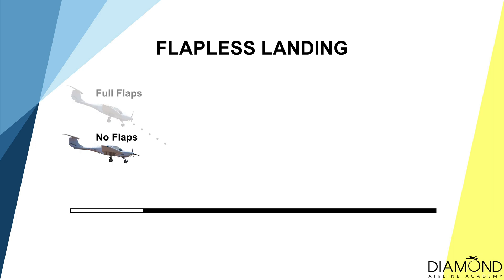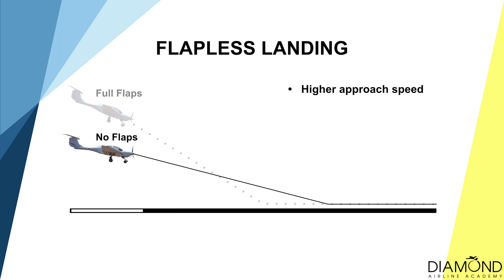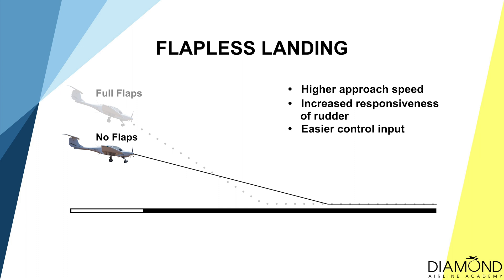During strong crosswind conditions, conducting a full flap landing can be quite challenging. Hence, a flapless landing can be used in an attempt to stabilise the approach and increase the chances of a successful landing. One of the reasons why a flapless landing can be easier during strong crosswind conditions is because of the higher approach speed. When the approach speed is faster, there will be more airflow around the control surfaces, especially the rudder. Because of this, the rudder would feel more responsive and would have more authority when yawing the aircraft. Less rudder input is required to line up for the runway, so it should be easier to handle during the landing phase.